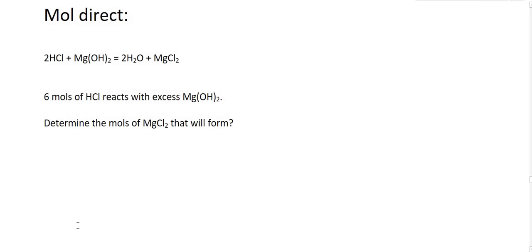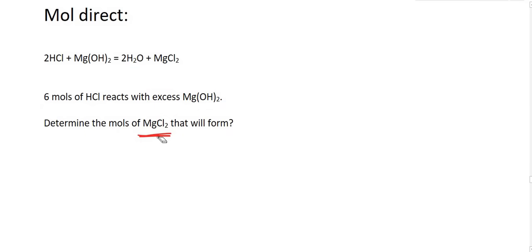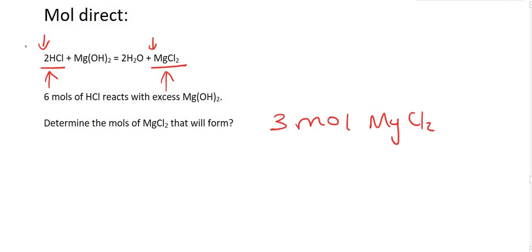Let's practice. Here's the first technique where they give you the moles directly. We've got this equation and we can see it's already balanced because there are numbers in the front. It says 6 moles of HCl reacts with excess magnesium hydroxide. 'Excess' means you don't have to worry about the magnesium hydroxide — there's more than enough. We need to determine the moles of MgCl2. Looking at HCl and MgCl2, their ratio is 2 to 1, so for every 2 HCl you form 1 MgCl2. If we have 6 moles of HCl, we will form 3 moles of MgCl2.